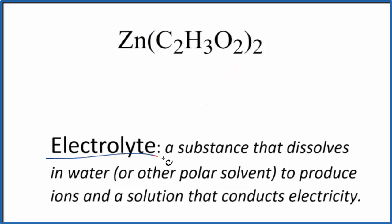For the definition of an electrolyte, it's a substance that dissolves in water or another polar solvent to produce ions. These ions allow the solution to conduct electricity.